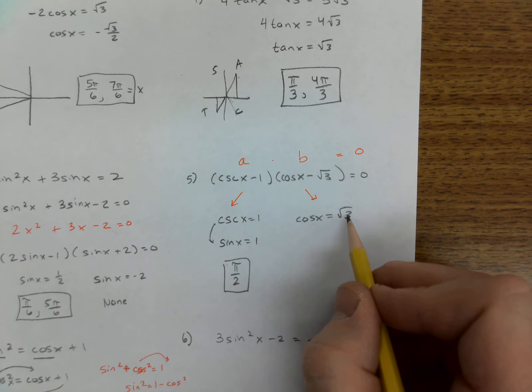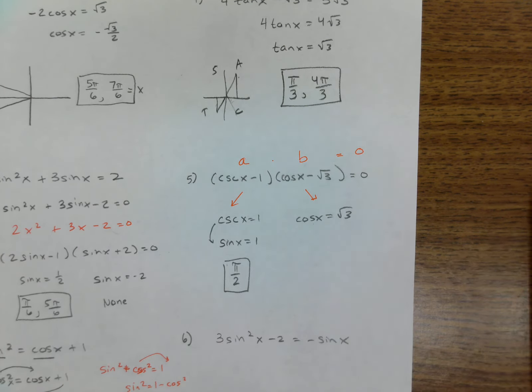When is sine 1? Well, that's that π over 2. There's a solution. One is cosine root 3? Well, root 3 is not on the unit circle for cosine—it is for tangent.